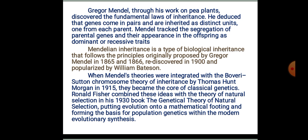Ronald Fisher combined these ideas with the theory of natural selection in his 1930 book The Genetical Theory of Natural Selection, putting evolution onto a mathematical footing and forming the basis for population genetics with the modern evolutionary synthesis.